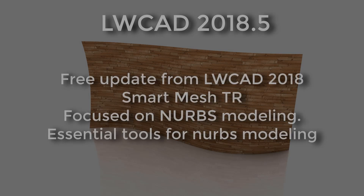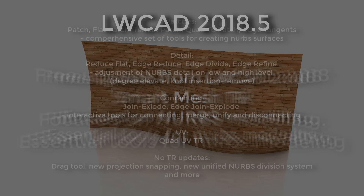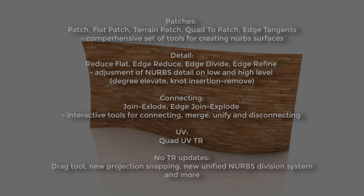LightwaveCat 2018.5 is a free update for users with version 2018. All new tools and updated tools are SmartMesh TR. This update is fully focused on NURPS modeling, so it will bring new essential tools for NURPS modeling. On this screen you can see the list of essential NURPS modeling tools. With the Patches tool you have a comprehensive set of tools for creating NURPS surfaces: Patch for creating 3D patches, Flat Patch for flat patches, and with Terrain you can generate terrain from input points or mesh.